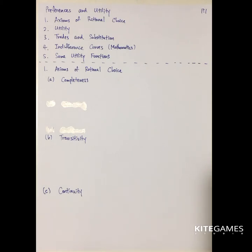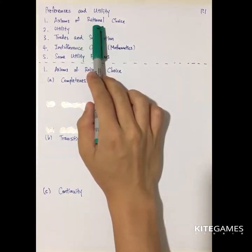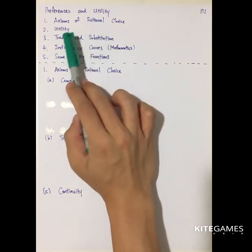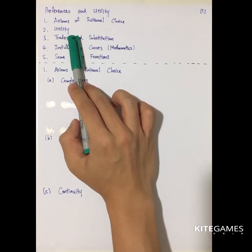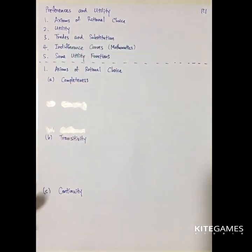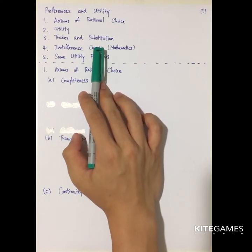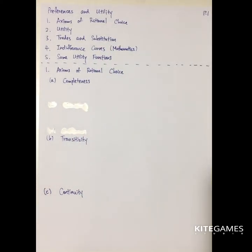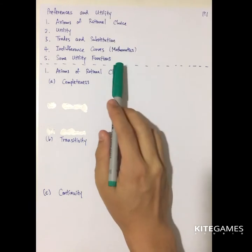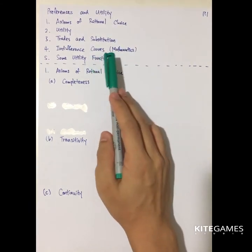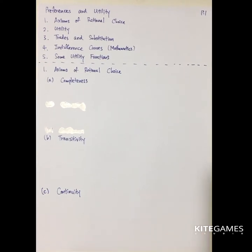The first thing you need to learn is preference and utility. We will start by talking about the axiom of rational choice — how humans make decisions. Second, we will investigate the measure of how people get satisfied with consumption goods. Next, we will talk about trade and substitution, meaning intrapersonal substitutions where you give up some X and demand more Y. Fourth, we will use mathematics to discuss indifference curve analysis. Finally, I will introduce some traditional utility functions.